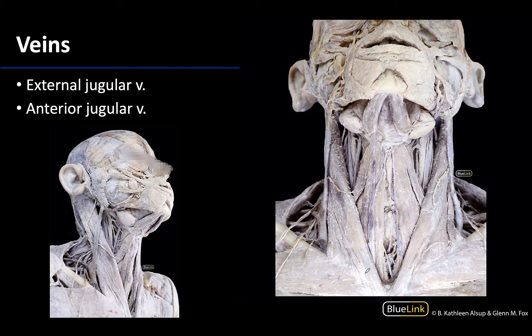Now let's move back superficially. These superficial veins are named because of their relative position to the deep fascia of the neck. Superficial veins are the most likely to have variations in size, appearance, and connections, but what we are going to be teaching you are the most typical patterns — these are the type of patterns that would be tested on.